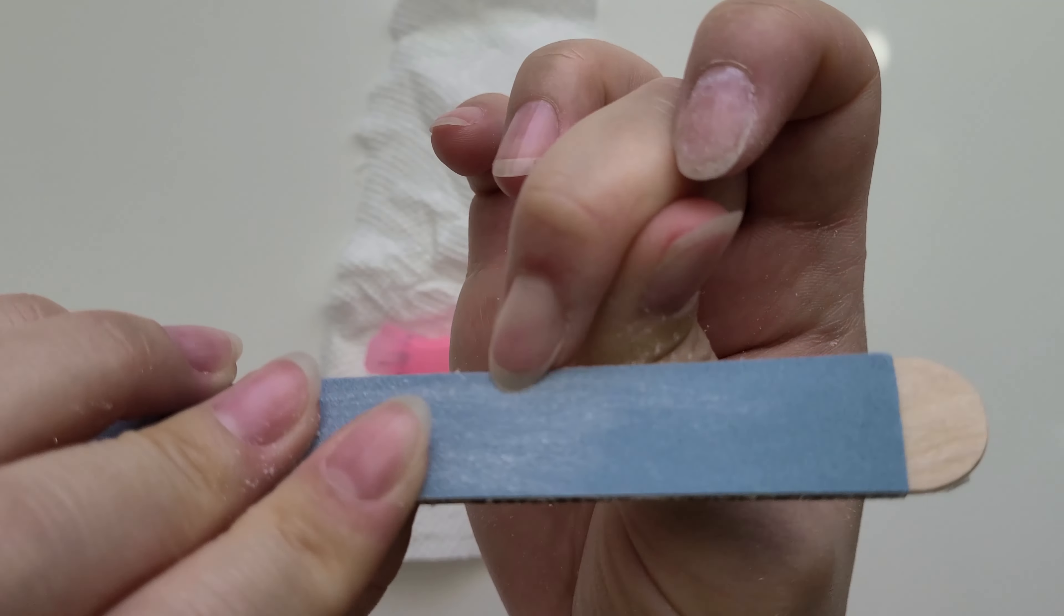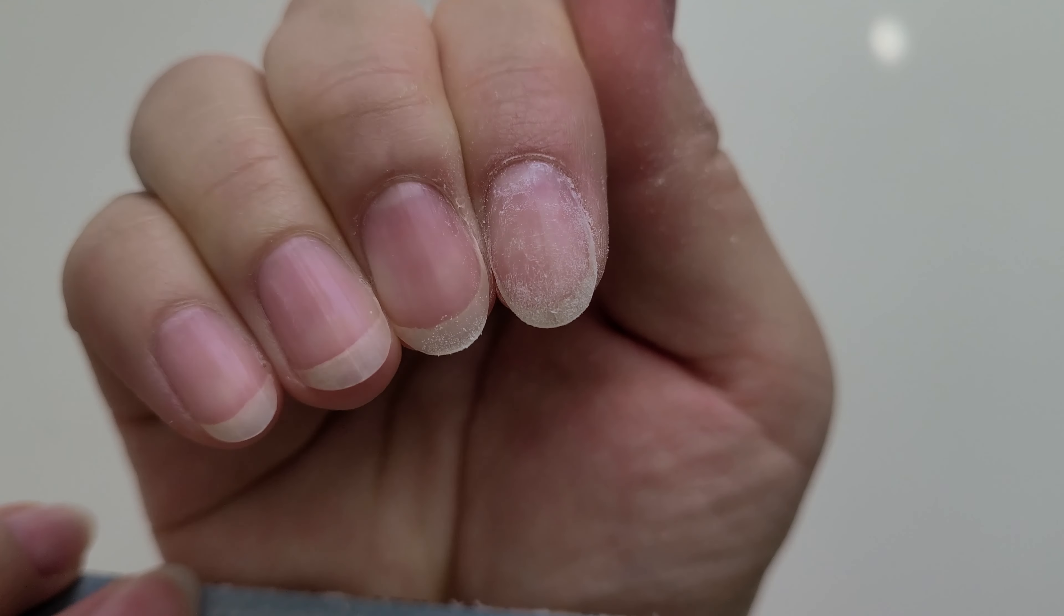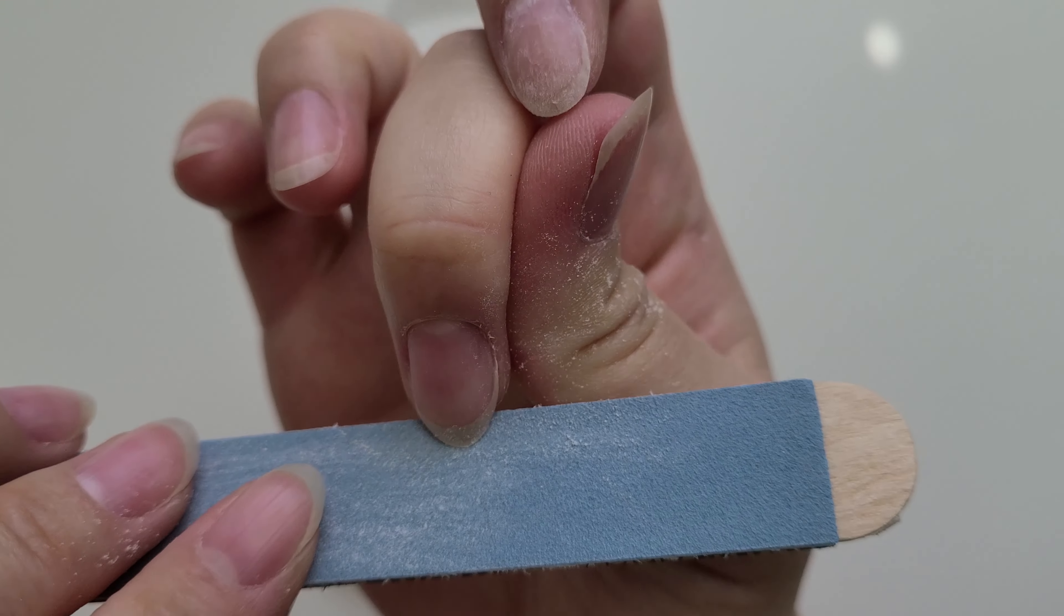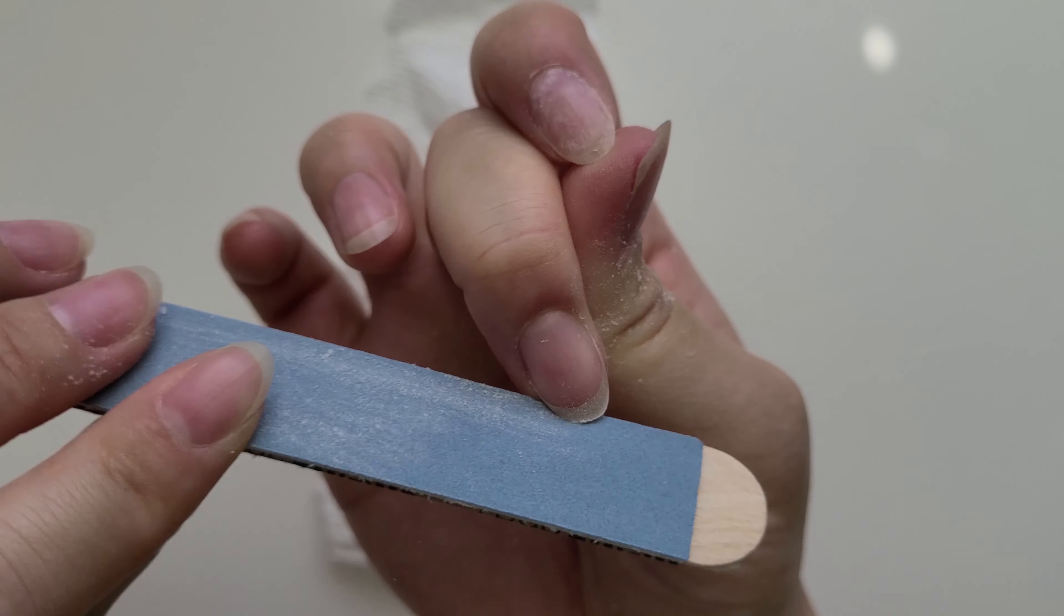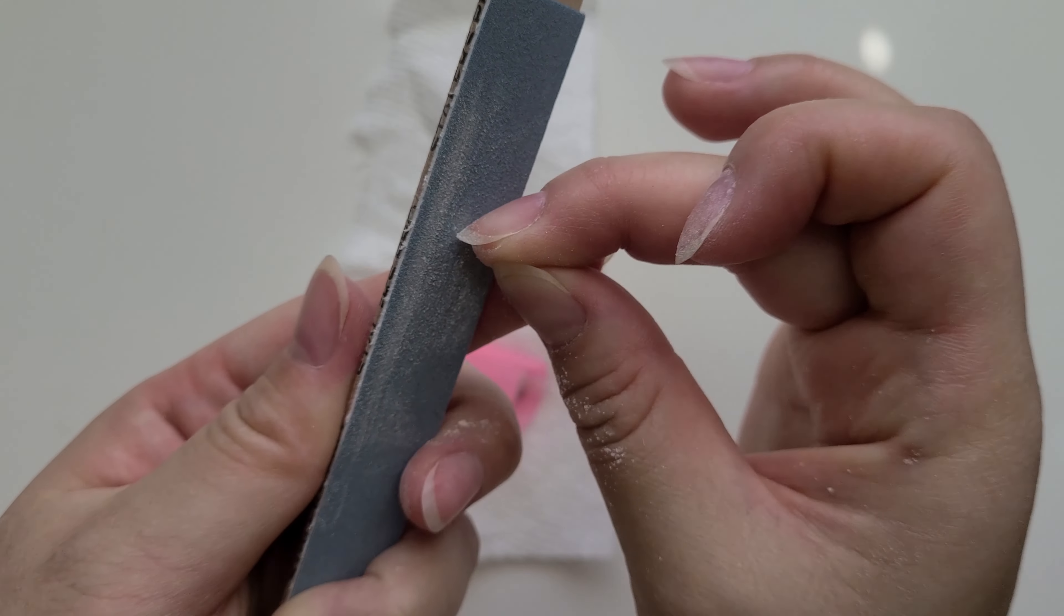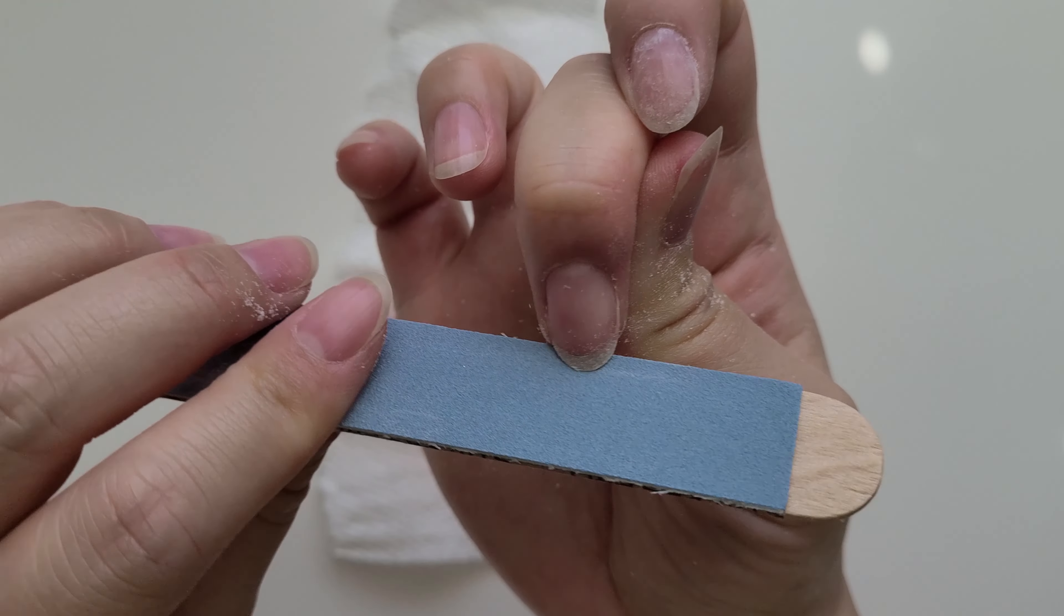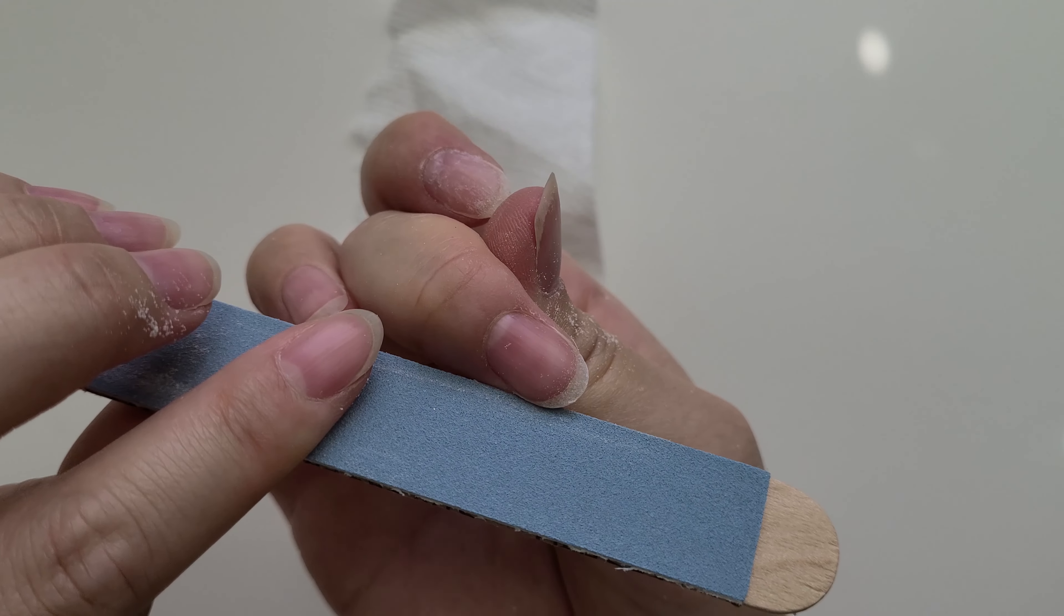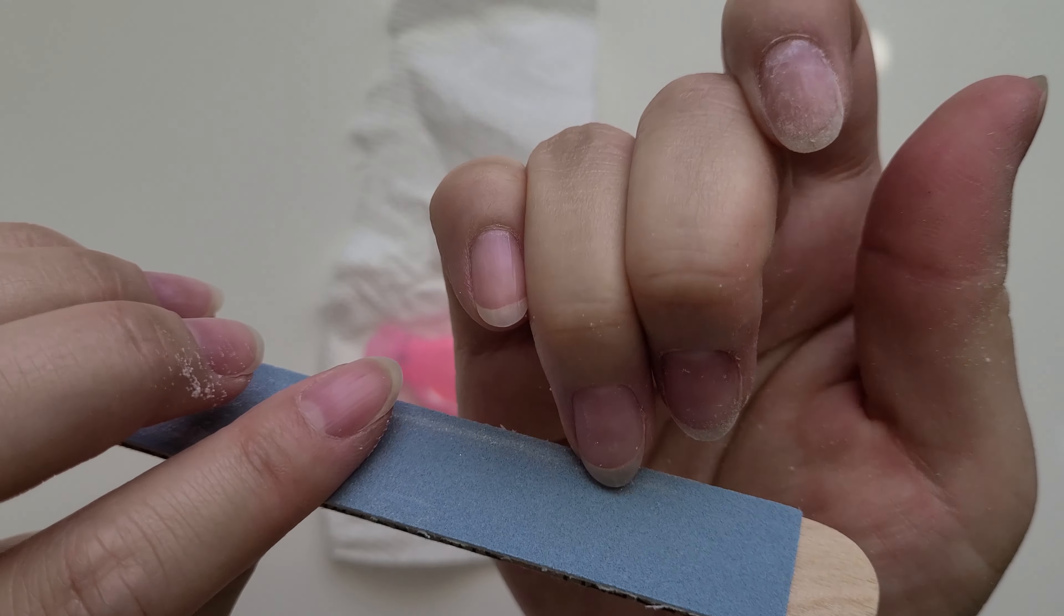First step is actually step zero. You want to take a step back and decide how long you want your regular nails to be, either for bare or for a new gel application. You would want to trim it down to that length right now before you start filing off anything.